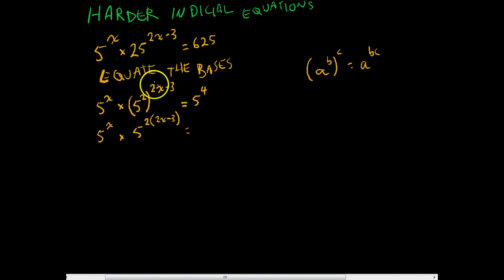Okay, so I'm just multiplying that by all of that. We get 5 to the power of x there. Then we get 5 to the x times, using my distributive law, multiply that by that and that by that. We get 5 to the 4x minus 6 equals 5 to the 4.